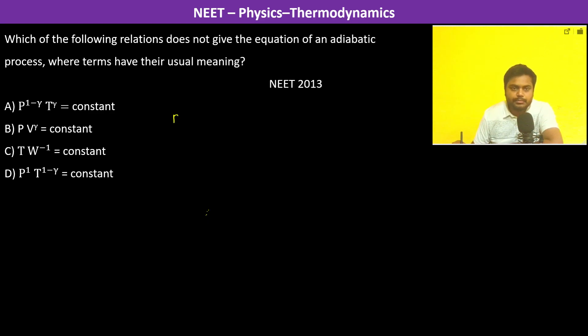In an adiabatic process, PV to the power gamma is going to be constant. Of course, this is valid. Now this is a relationship between P and T.